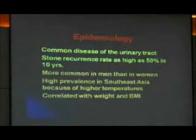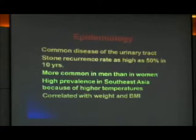So what is urolithiasis? It's a disease where you have a stone in the kidney, the ureter, or the urinary bladder. It's very common. In the U.S., with a population of around 320 million, 9 to 10% of all the people will develop a kidney stone in their lifetime. Stone recurrence rate is as high as 50% in 10 years — once a stone former, always a stone former.